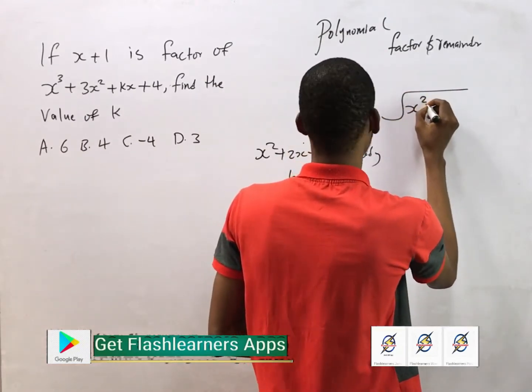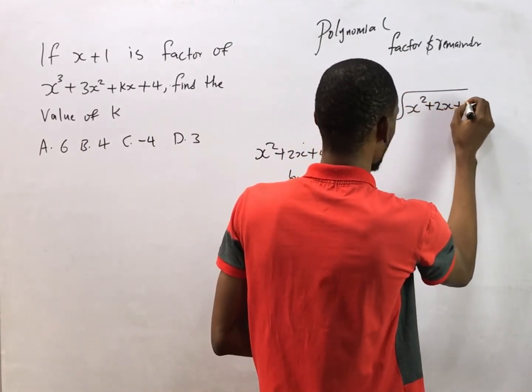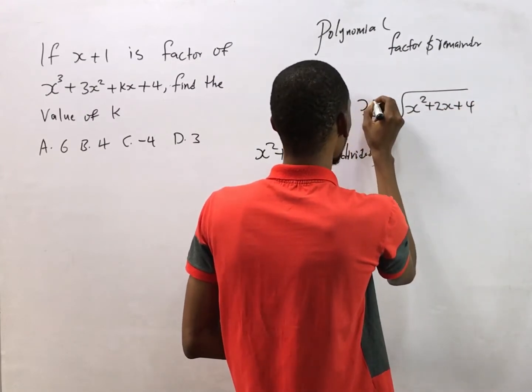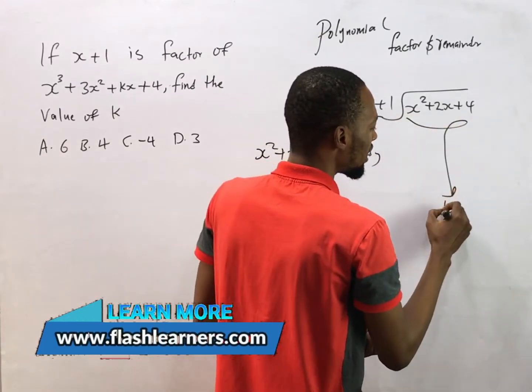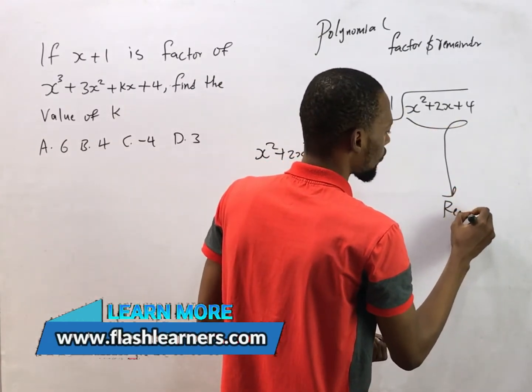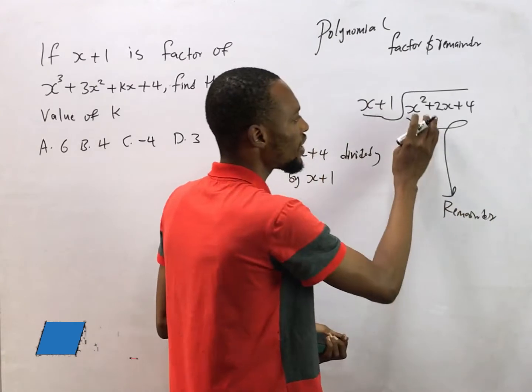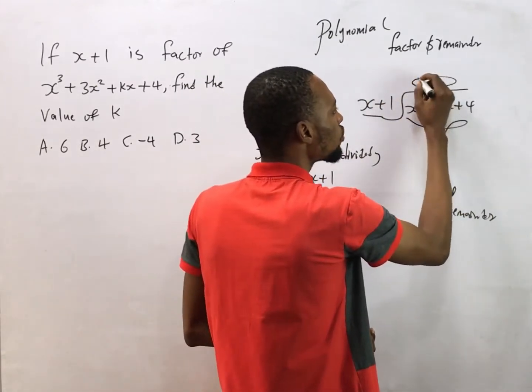s squared plus 2s plus 4, then here will be s plus 1. After solving I'll get a remainder here, and the value I'll get here is the quotient.